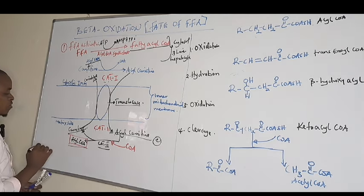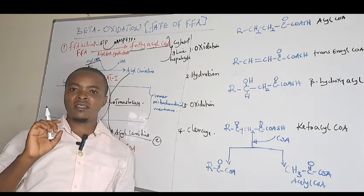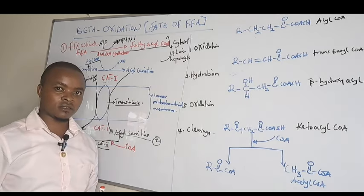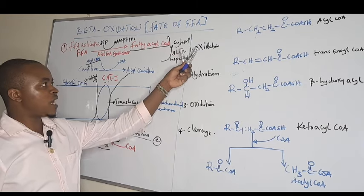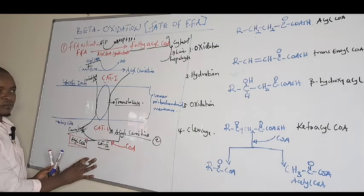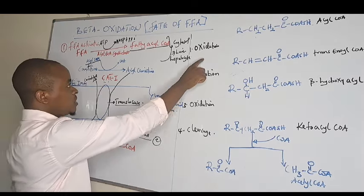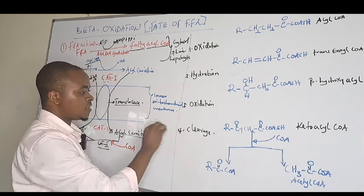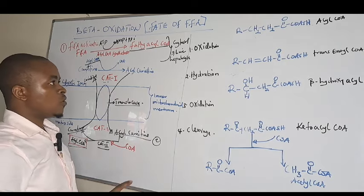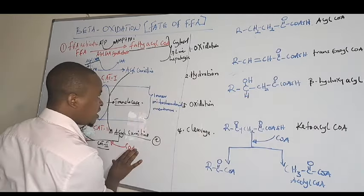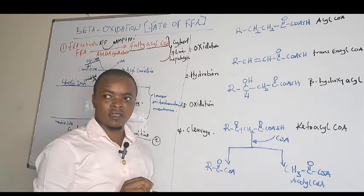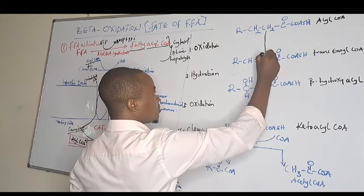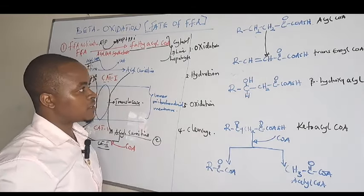After bringing fatty acyl-CoA into the mitochondrial matrix, four reactions take place, all occurring in the mitochondrial matrix: oxidation, hydration, oxidation again, and lastly cleavage. The acyl-CoA in the mitochondrial matrix first undergoes oxidation to form trans-enoyl-CoA.